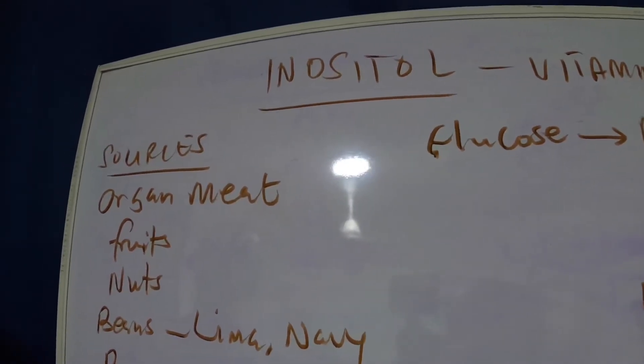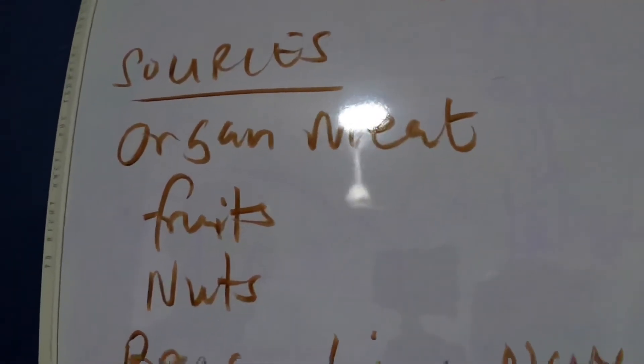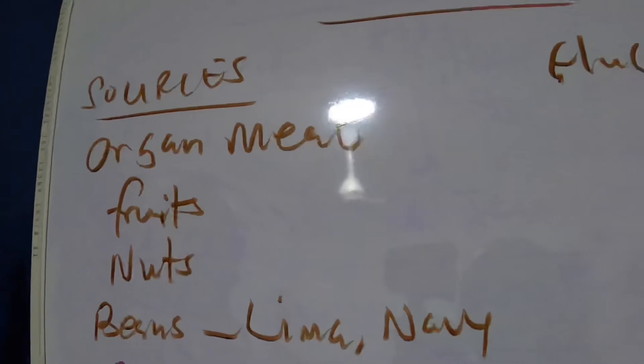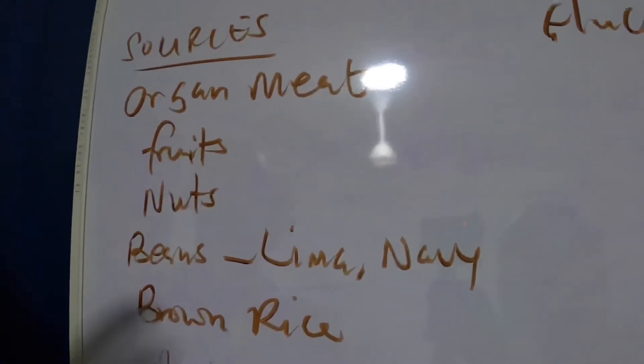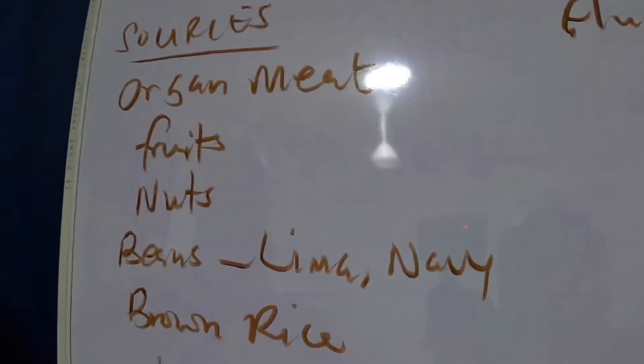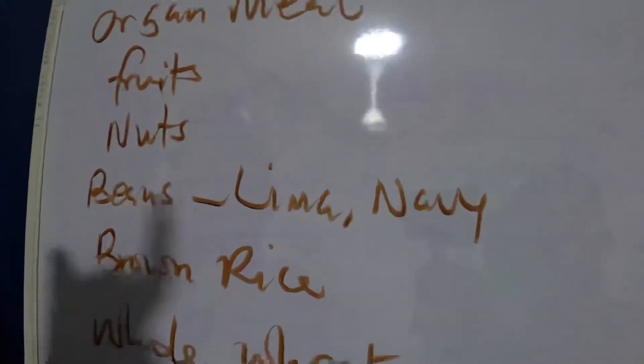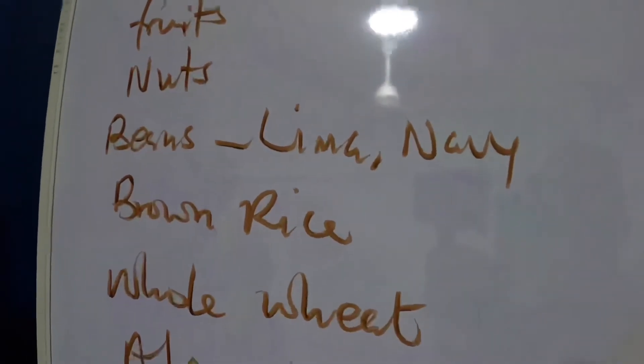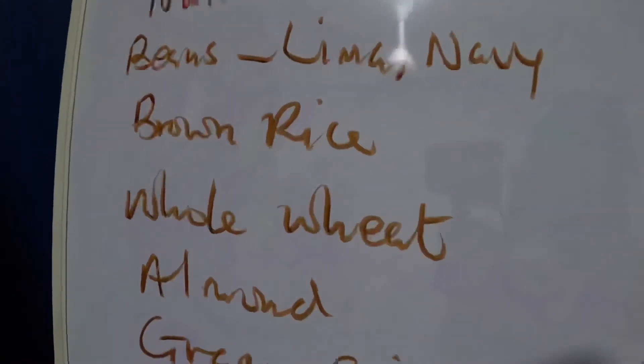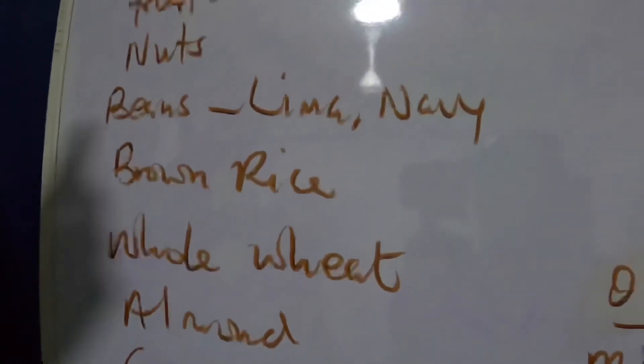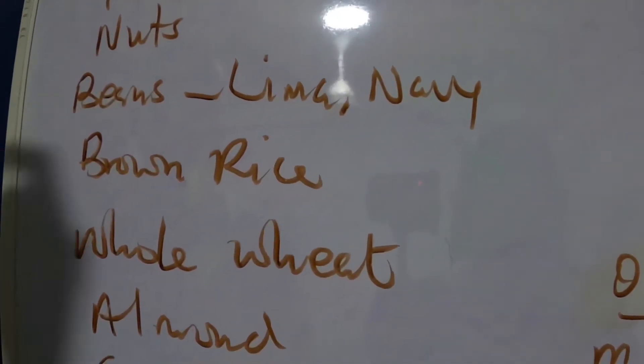We've seen organ meats—so we mean the organs of meats like liver, the kidneys, and all that. All organs of meats are sources of vitamin B8. Fruits are also a very good source of vitamin B8, and we have nuts. The beans—the lima and the navy beans—have been shown to have higher contents of vitamin B8. Brown rice also has a very good level of vitamin B8, and then whole wheat.